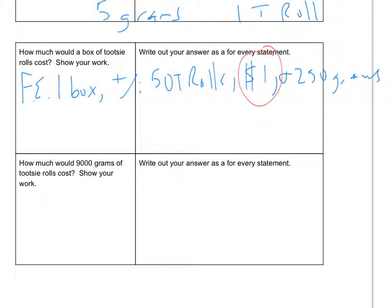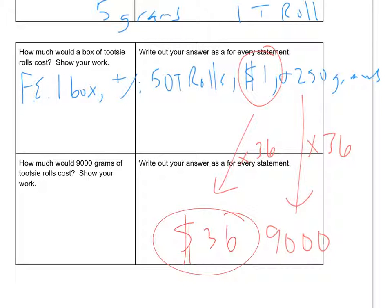Now let's try the next part of the problem. It says, how much would 9,000 grams of Tootsie Rolls cost? Okay. So 9,000. We're going to have to come over here. I'm going to go to 9,000. Well, 250 times 4 is 1,000. And 4 times 9 is 9,000. So this would be 36. And then I would just multiply this one by 36. And that would give me $36 for 9,000.